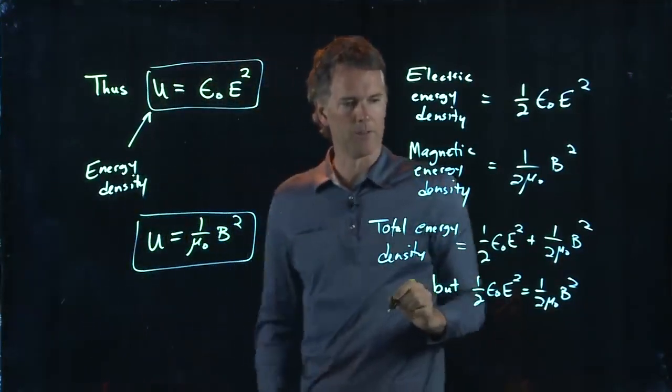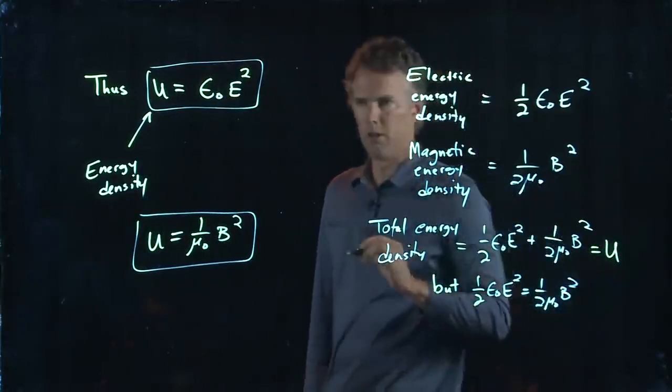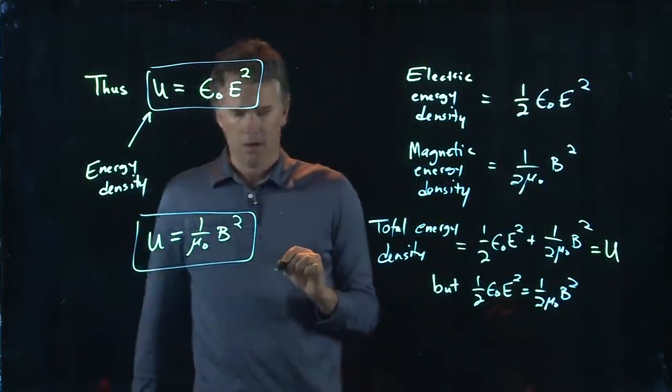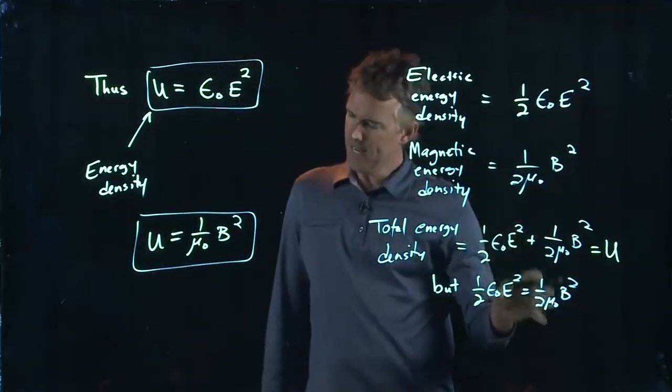And this is what we're calling U, the total energy density. Okay, so we have equal parts E and B.